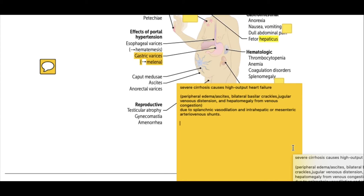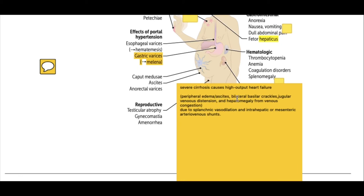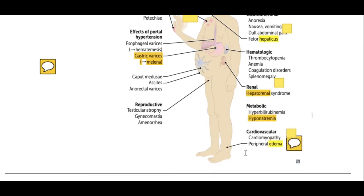Regarding the cardiovascular system, severe cirrhosis leads to cardiomyopathy and high-output heart failure due to increased blood volume in the vessels, caused by splanchnic vasodilation and intrahepatic or mesenteric arteriovenous shunts. This results in peripheral edema, ascites, bilateral basilar crackles, jugular venous distension, and hepatomegaly from venous congestion.